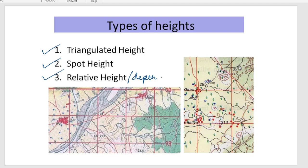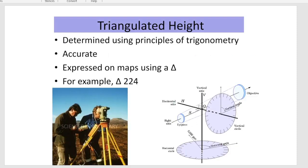Let us now quickly learn in detail about these particular types of height. The triangulated height is determined using principles of trigonometry. It gives you one of the accurate measurements and the major symbol which is being used is the triangle.